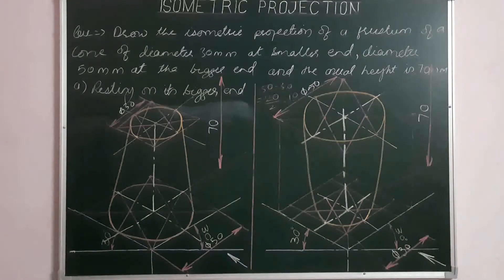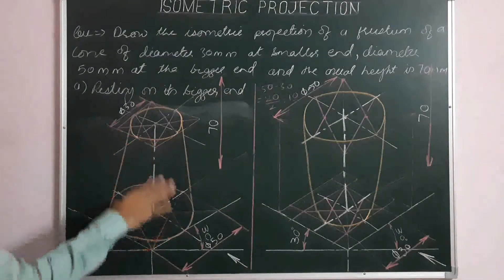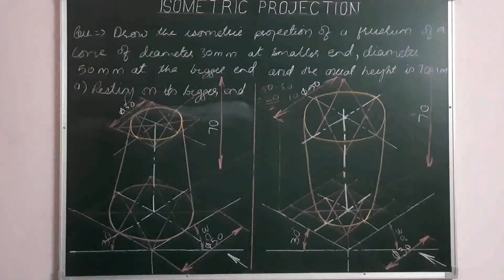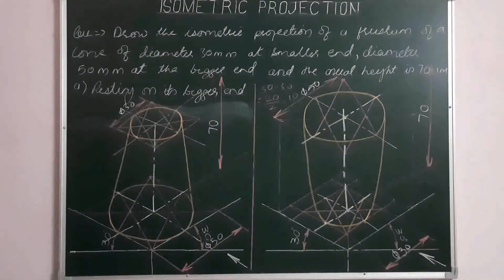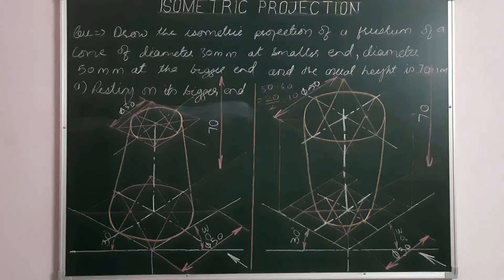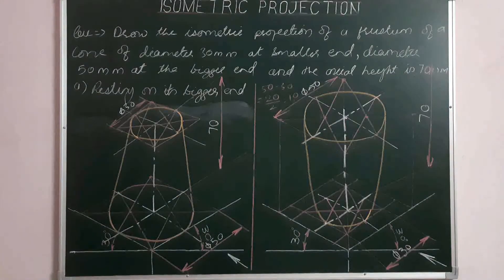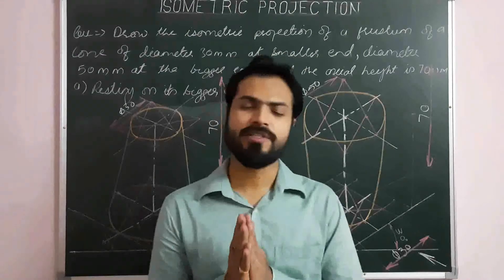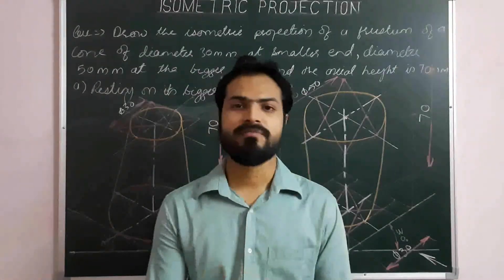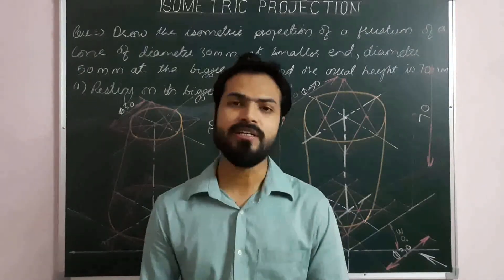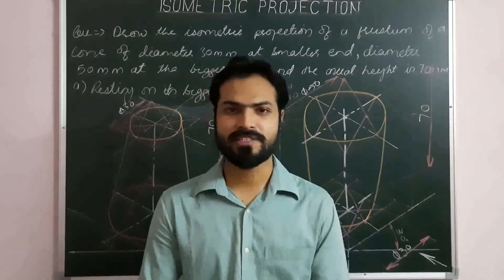These are the final projections of the frustum of cone. In the first case, the frustum is resting on its bigger end, solved using the progressive construction method. In the second case, it is resting on its smaller base, solved using the extraction method. You can use either method. Please solve these problems on your sheet, and if you have any doubts regarding this or any other engineering graphics problem, write in the comment section. Thank you.